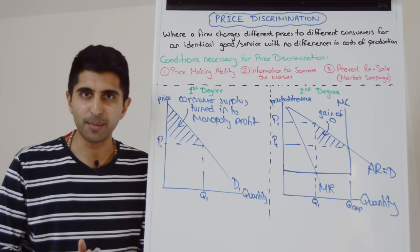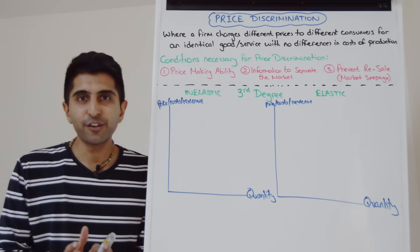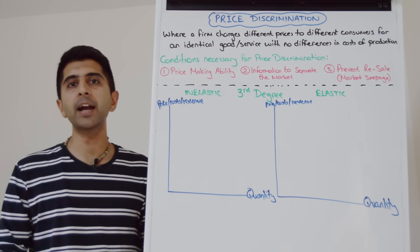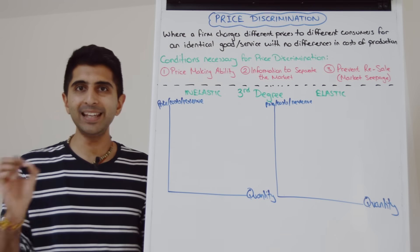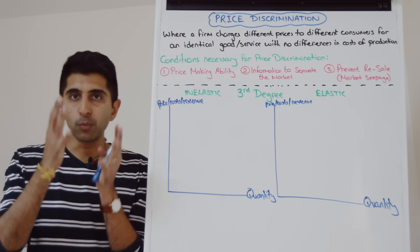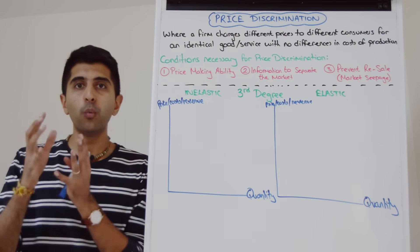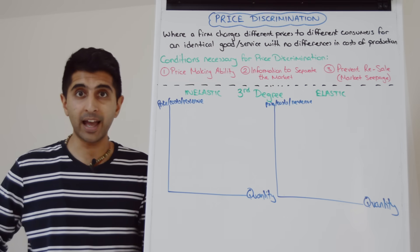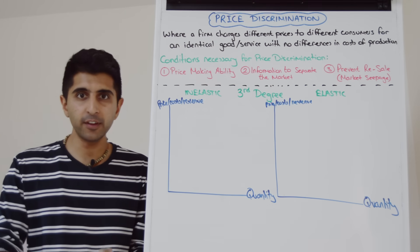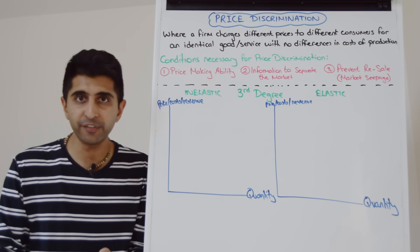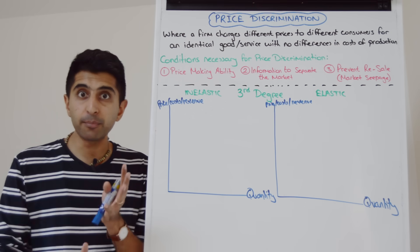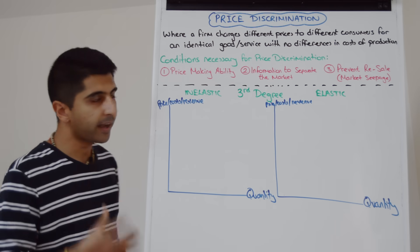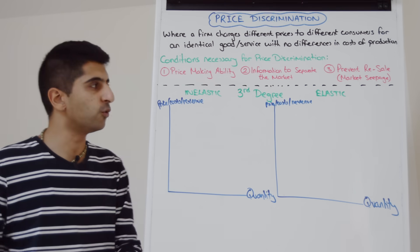Let's now move on and look at third degree price discrimination. Third degree price discrimination occurs when a firm is able to segment the market into different price elasticities of demand. So there'll be one group of consumers with price inelastic demand, one group of consumers with price elastic demand. A firm will recognize that, maybe based on time differences, maybe based on age, income or geography, and therefore will charge different prices to those different groups. So let's take an example of a rail company. A rail company has identified different groups of consumers: consumers with inelastic demand, i.e. those commuters who need to get to work, and those with more price elastic demand, leisure travelers.